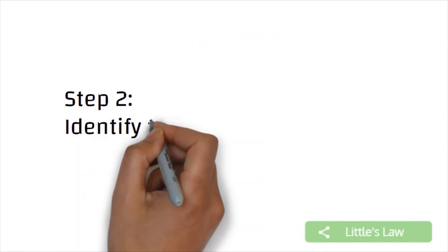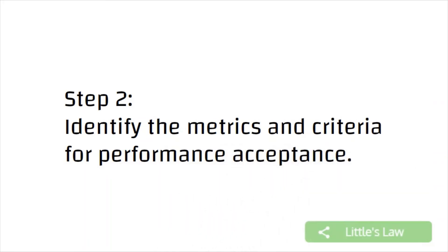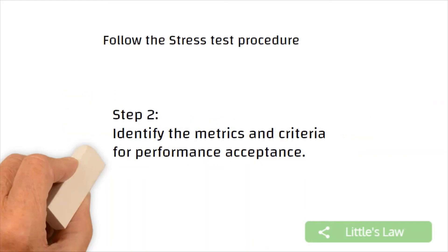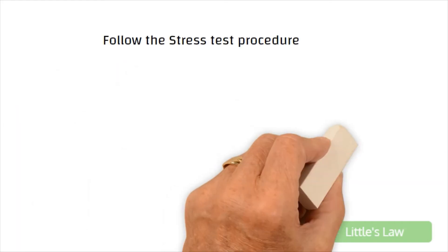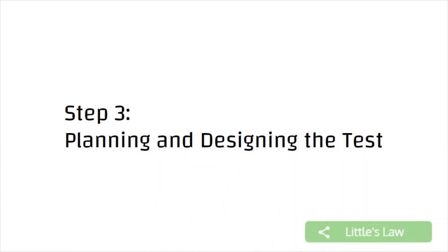Identify the metrics and the criteria for performance acceptance. So basically identifying the service level agreement. So categorizing and identifying the metrics that will be used to measure the performance of the system under stress. So we have to set the success criteria for the system before we do the test. Step three, planning and designing the test. Creating a plan and a design for the stress test and identifying the test case scenarios will play a vital role in the stress testing.